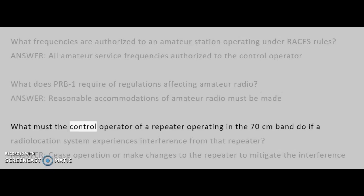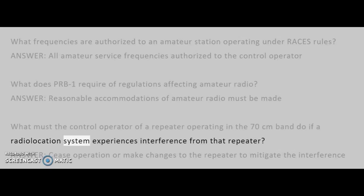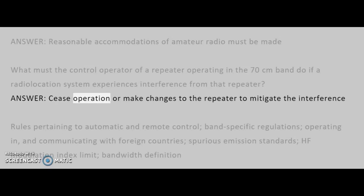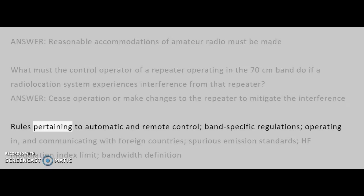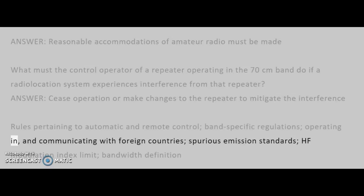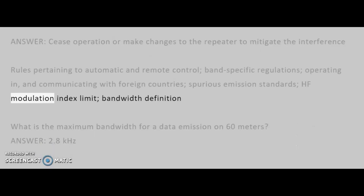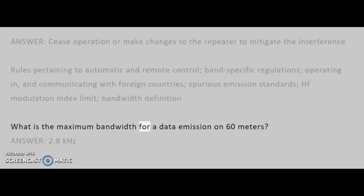What must the control operator of a repeater operating in the 70 cm band do if a radiolocation system experiences interference from that repeater? Answer: Cease operation or make changes to the repeater to mitigate the interference. Topics include rules pertaining to automatic and remote control, band-specific regulations, spurious emission standards, HF modulation index limit, and bandwidth definition. What is the maximum bandwidth for a data emission on 60 meters? Answer: 2.8 kHz.